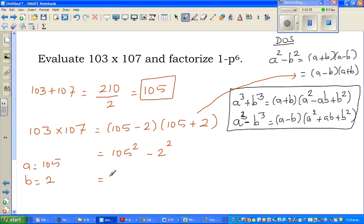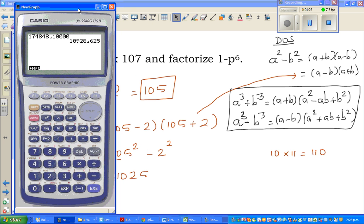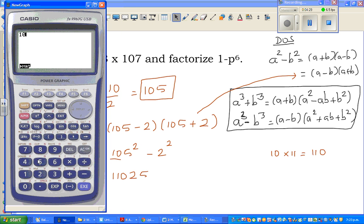Now to write the square of 105, there's a neat way of writing directly. First you write 25, and then you do 10 times 11, is 110. I'll show this on the calculator. 105 squared is 11025. Suppose if it is 95 squared, I know 9 times 10 is 90, so it would be 9025. 95 squared is 9025. So look at the pattern.